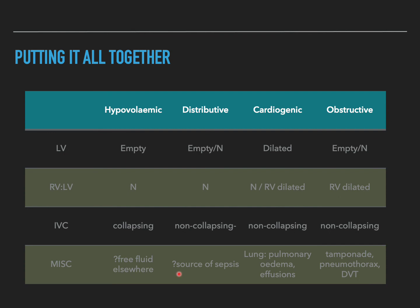Putting all the information together: if a patient is in shock and the LV is completely collapsing, the RV-to-LV ratio is normal, and the IVC is collapsing during breathing, the patient is likely in hypovolemic shock. On the other hand, if the patient is in shock but the LV is dilated and the IVC is not collapsing, this indicates the heart is sick and the patient is in cardiogenic shock.